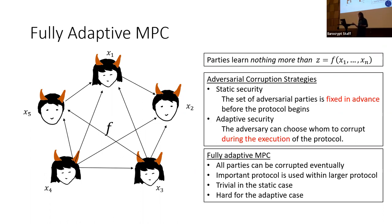For randomized functionalities where the randomness is not known, we want to guarantee security properties even when all inputs and randomness used in the protocol are leaked. Full corruption is trivial in the static case, but it's really challenging in the adaptive setting.